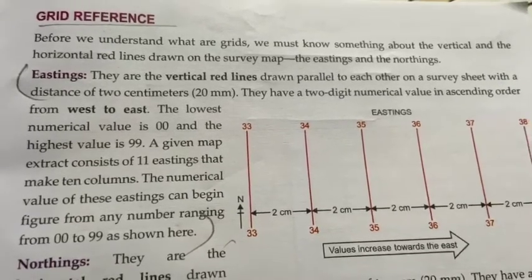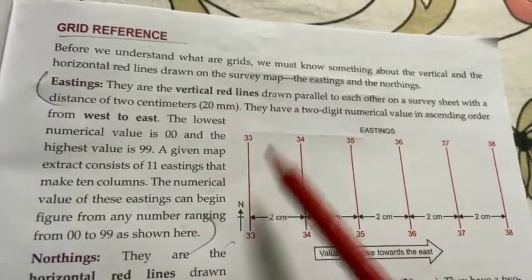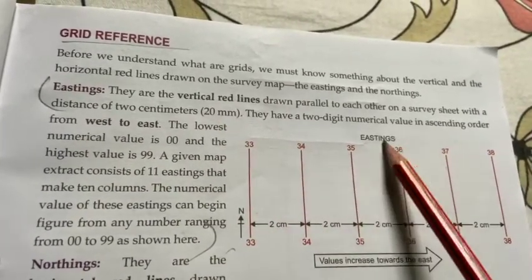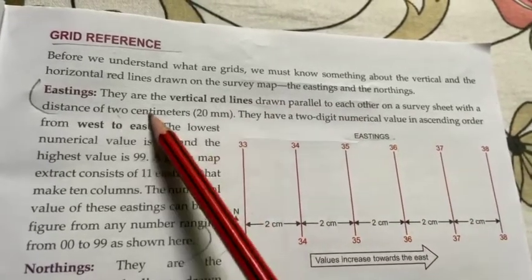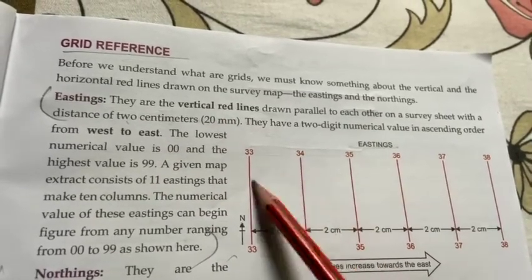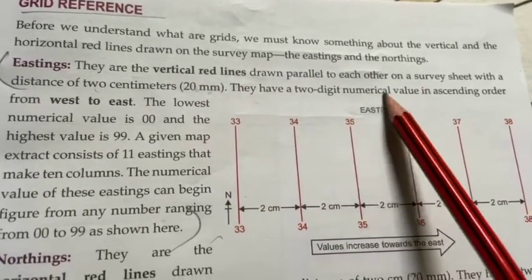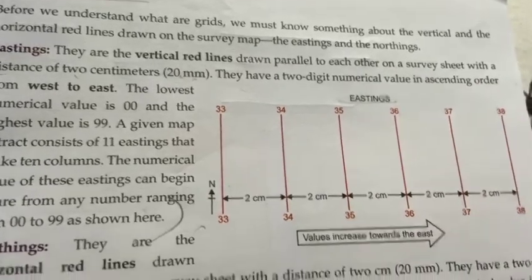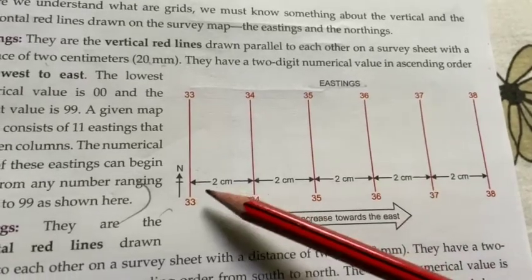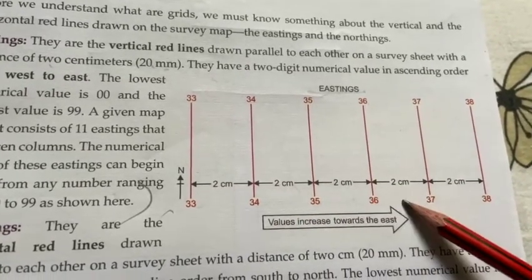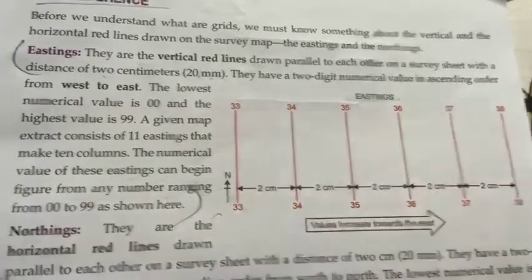Eastings क्या होती हैं? Eastings are vertical red lines — standing lines जो होती हैं, इसको eastings कहते हैं। ये red color से बनी होती हैं, parallel होती हैं, और इनके बीच में 2 centimeter का distance होता है, जो कि 20 millimeter है। They have a two-digit numerical value in ascending order — 33, 34, 35, 36, 37, 38 — ऐसे ascending order में।